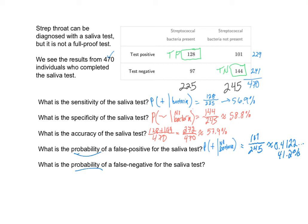Just be careful with the notation — probability can be written as a fraction or a decimal, and oftentimes we might want to see it as a percent as well, so hopefully you're comfortable converting between all three. Finally, the probability of a false negative: the probability that someone comes in and tests negative given that they do have the bacteria present.